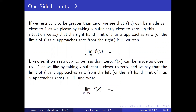Likewise, if we restrict x to be less than 0, f(x) can be made as close to negative 1 as we like by taking x sufficiently close to 0. We say that the limit of f as x approaches 0 from the left, or the left-hand limit of f as x approaches 0, is negative 1. And write: the limit as x approaches 0 from below of f(x) equals negative 1.